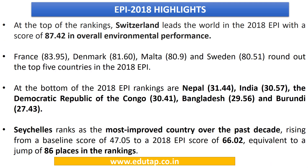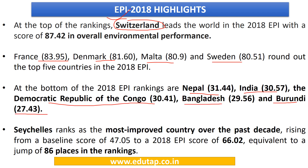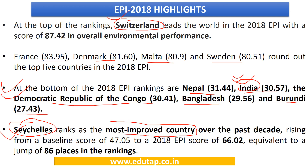The top 5 countries as per EPI 2018 are Switzerland, France, Denmark, Malta, and Sweden. The bottom 5 countries are Nepal, India, Democratic Republic of Congo, Bangladesh, and Burundi. Details of India's low rank are explained in a later section. Seychelles is ranked as the most improved country over the past decade.